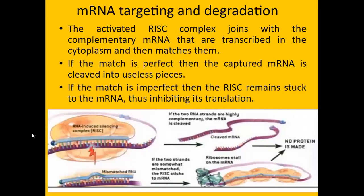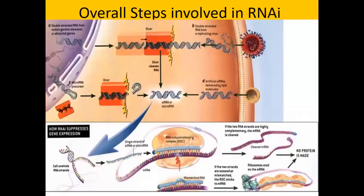The single-stranded RISC complex then gets activated. For mRNA targeting and degradation: the activated RISC complex joins with complementary mRNA transcribed in the cytoplasm and matches them. If the match is perfect, the captured mRNA is cleaved into useless pieces. If the match is imperfect, RISC remains stuck to the mRNA, inhibiting its translation. The overall steps of RNA interference are shown in the flow chart.